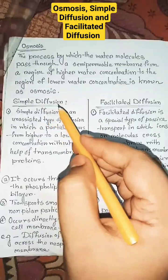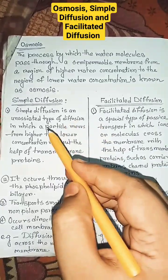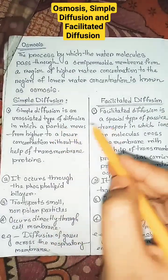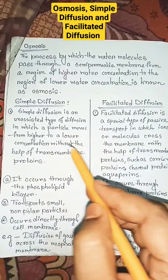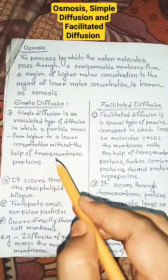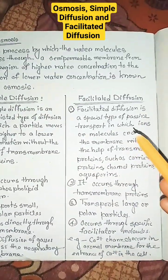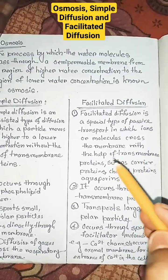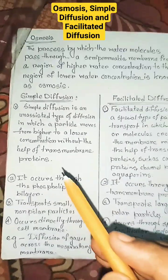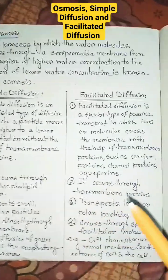Difference between simple diffusion and facilitated diffusion. Simple diffusion is an unassisted type of diffusion in which a particle moves from higher to lower concentration without the help of transmembrane proteins. Facilitated diffusion is a special type of passive transport in which ions or molecules cross the membrane with the help of transmembrane proteins. Simple diffusion occurs through the phospholipid bilayer, while facilitated diffusion occurs through transmembrane proteins.